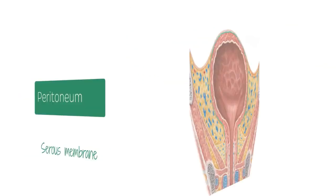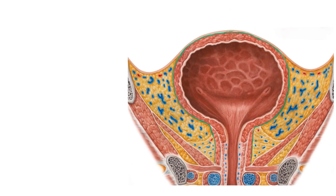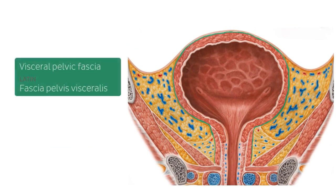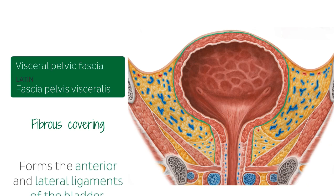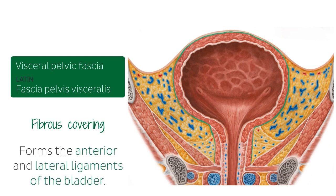The next structure we're going to be highlighting here is known as the visceral pelvic fascia. This is a fibrous covering over the various pelvic viscera that is attached to the diaphragmatic part of the pelvic viscera. In this illustration we see the part of the pelvic fascia that covers the bladder. It is also worth noting that it forms the anterior and lateral ligaments of the bladder.